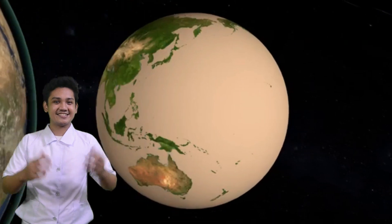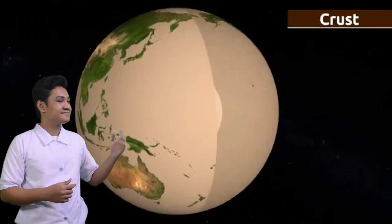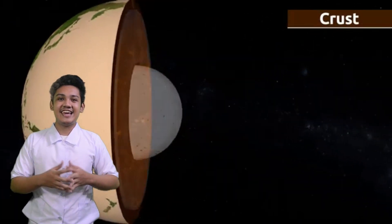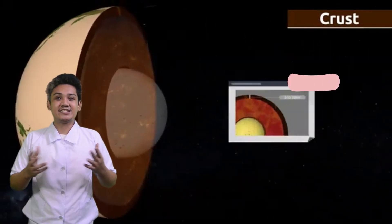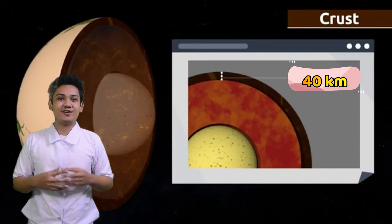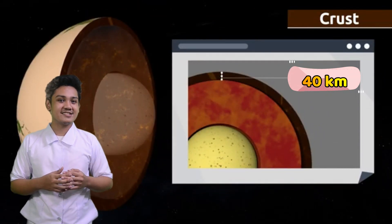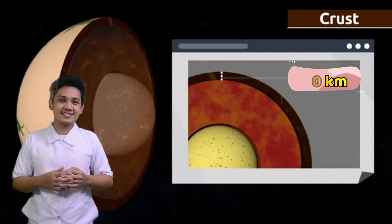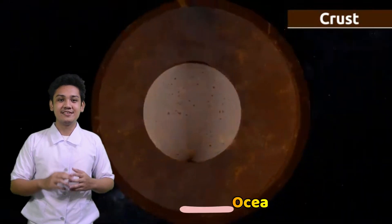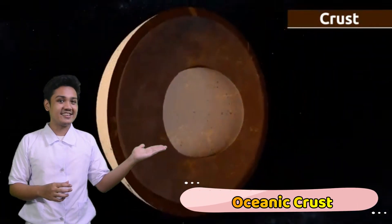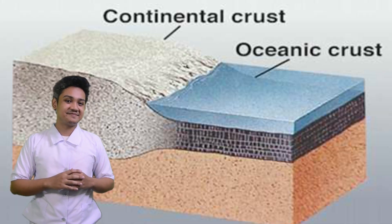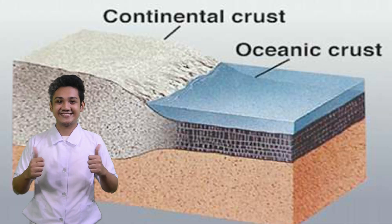The crust is a thin layer measuring 40 kilometers deep, composed of solid rocks and minerals. It is divided into two forms: the oceanic crust and the continental crust.